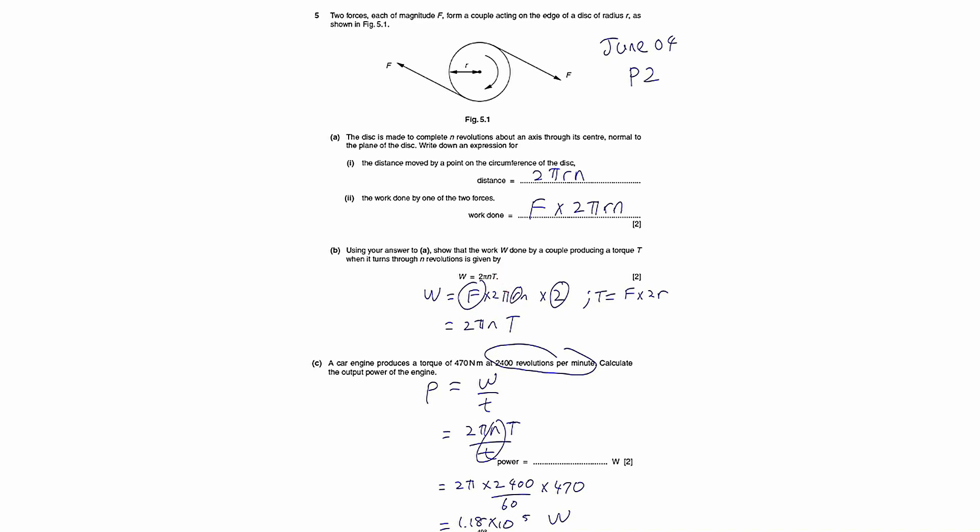We need to find a formula that links the quantity you want to introduce, which is t, and the quantities you want to eliminate, which is F and r. We know the torque will be F times the perpendicular distance between the two forces, which is 2r.